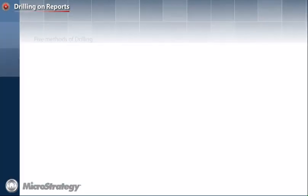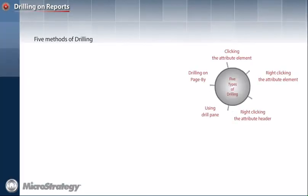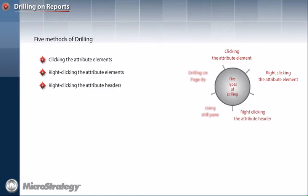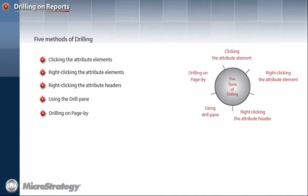Let us now discuss the five different methods with which we can perform drilling. You can drill a report by clicking the attribute elements, right-clicking one or more attribute elements, right-clicking an attribute header, using the drill pane, and drilling on the page by axis of a report.